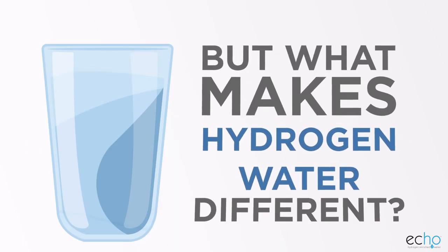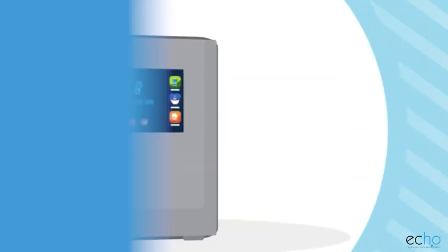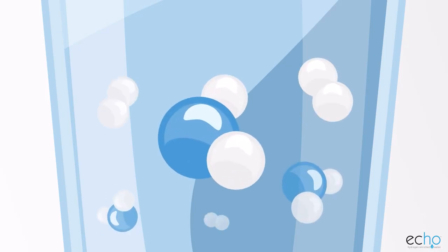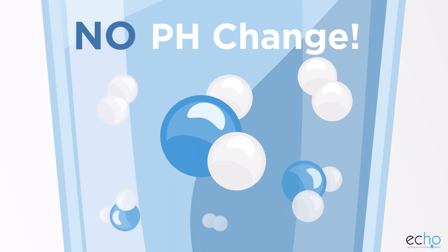But what makes hydrogen water different? Echo machines are designed to dissolve more hydrogen gas into your water, making your normal water into hydrogen water with no pH change.